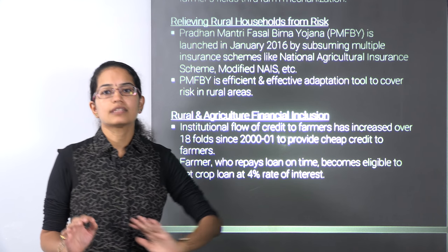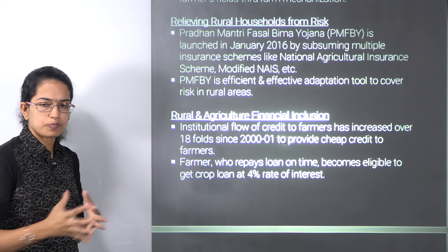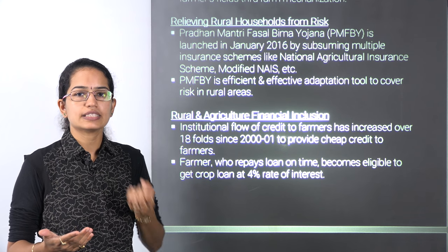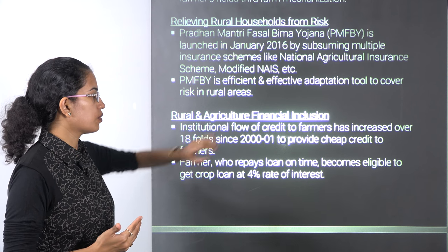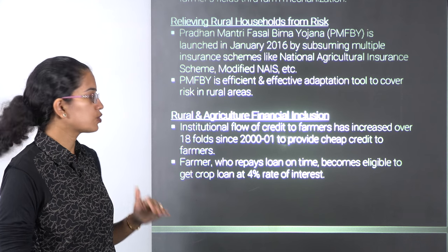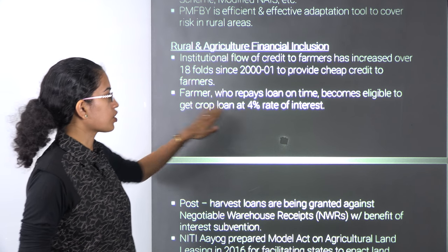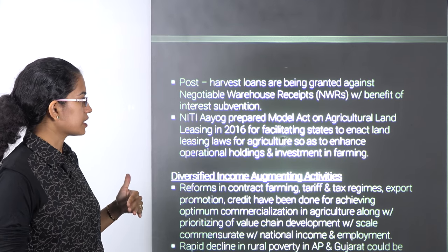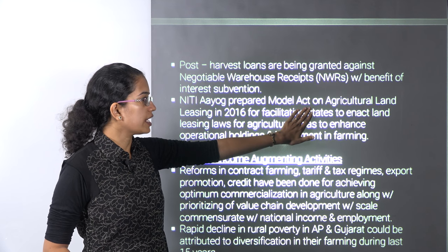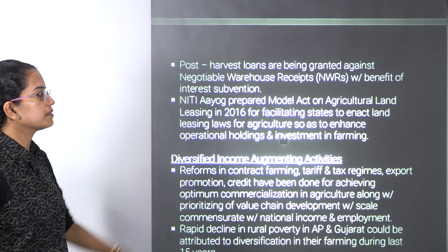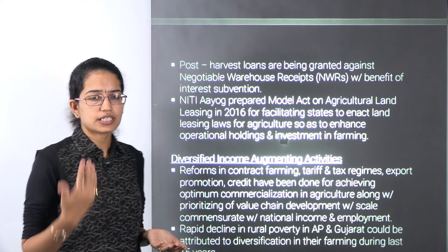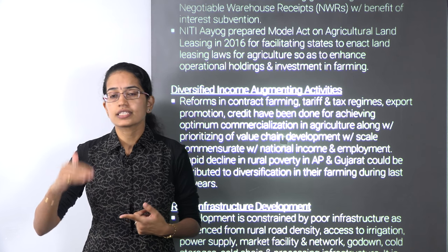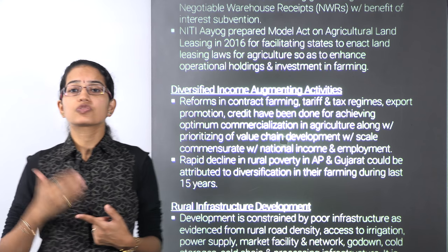We talk about financial inclusion through Pradhan Mantri Jan Dhan Yojana, which talks about opening zero-balance bank accounts. Making easier credit available to farmers is a major aim — crop loans would be at 4% interest rate, considered a very low rate. NITI Aayog has also prepared a model act for agricultural land leasing in 2016 that enhances operational land holdings and brings in more investment in farming. Another way to increase farmer income is through diversification.